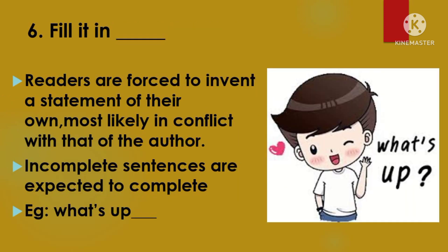The sixth type of ambiguity involves half or incomplete sentences where we are expected to complete them — sometimes called a 'philleton.' When a statement says nothing and readers are forced to invent a statement of their own, most likely in conflict with that of the author. For example, when your friend asks 'What's up?' you have to complete the incomplete sentence yourself.